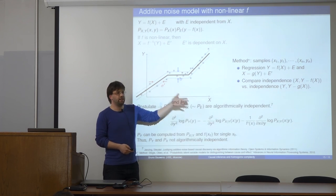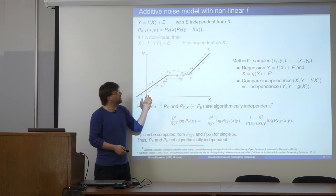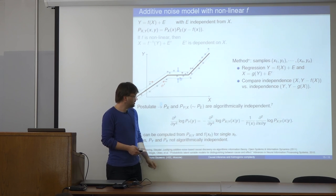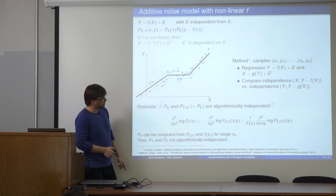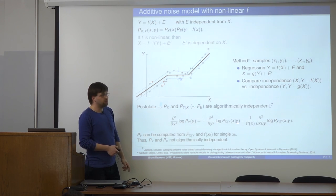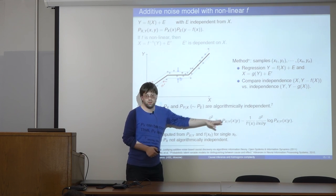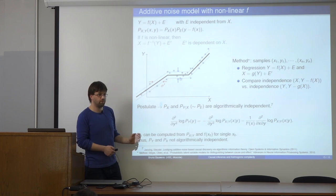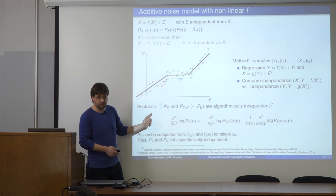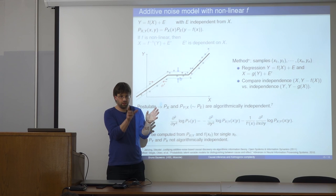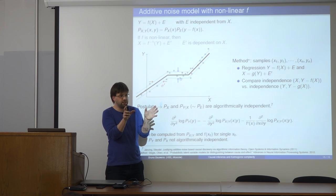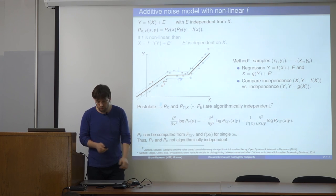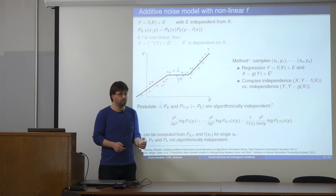How does this method relate to the postulate? It turns out it nicely relates because of a specific equation. This equation says that for the wrong direction, you can compute the marginal distribution from the conditional one. The computation involves double derivatives and integration so it's very noisy in practice, but at least in principle there is a connection. For the incorrect causal direction, the marginal and conditional distribution have maximal mutual information, so if you sum their complexities it will be much bigger than in the correct direction.